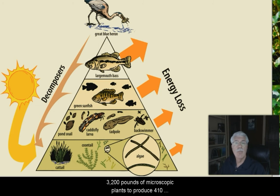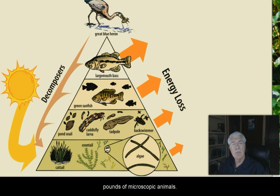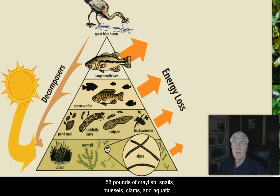For example, it takes about 3,200 pounds of microscopic plants to produce about 400 pounds of microscopic animals. These 400 pounds of microscopic animals can feed about 60 pounds of crayfish, snails, mussels, clams, and aquatic insects.